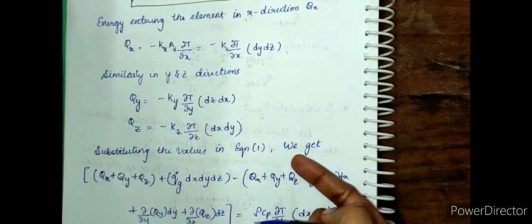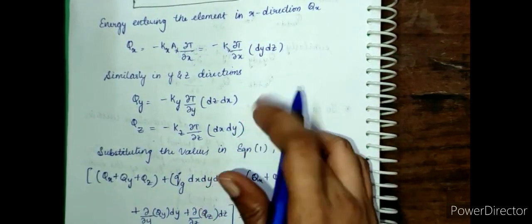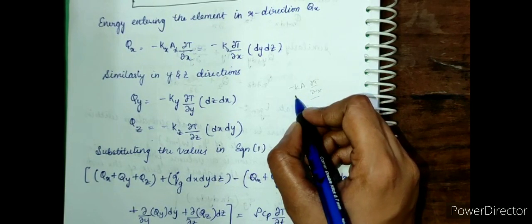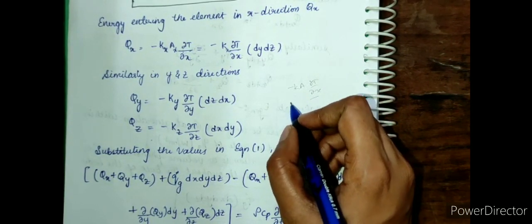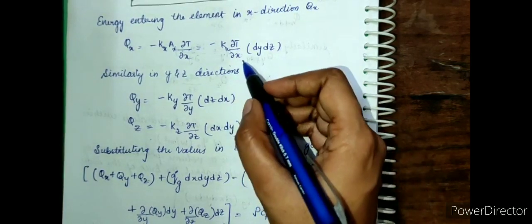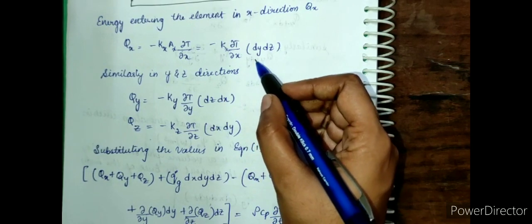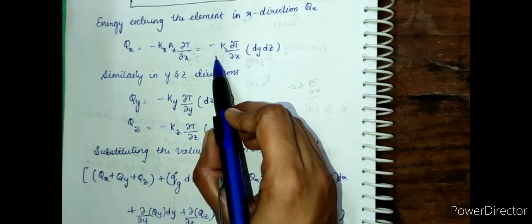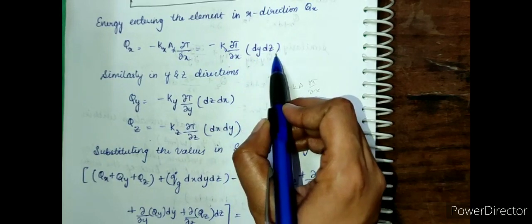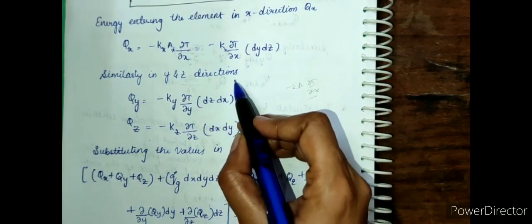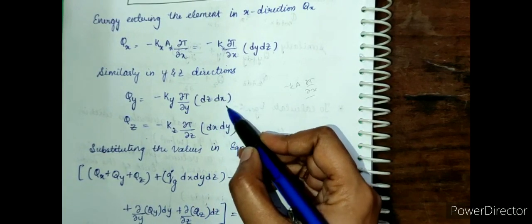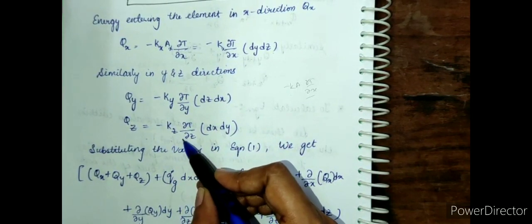Now we apply Fourier's law of heat conduction. The heat flow rate equation is q = −k·(∂T/∂x). Here we assume kx, ky, kz are the thermal conductivities in the x, y, z directions, and ax, ay, az are the respective areas in the flow directions. Therefore: qx = −kx·(∂T/∂x)·dy·dz; qy = −ky·(∂T/∂y)·dz·dx; qz = −kz·(∂T/∂z)·dx·dy.